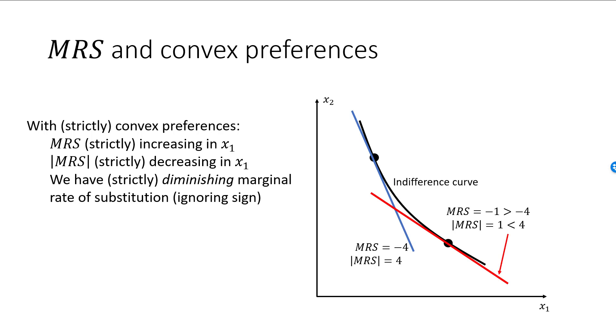It is common to say that a consumer exhibits diminishing marginal rate of substitution if preferences are convex. Such a statement may seem odd, since the marginal rate of substitution increases with x1. However, in this statement, the sign of MRS is ignored.